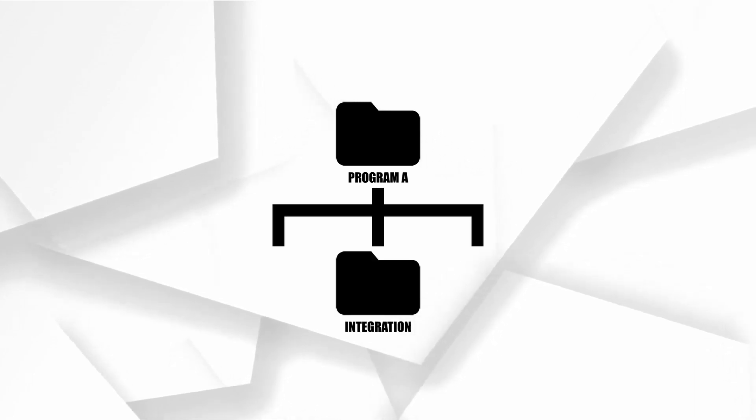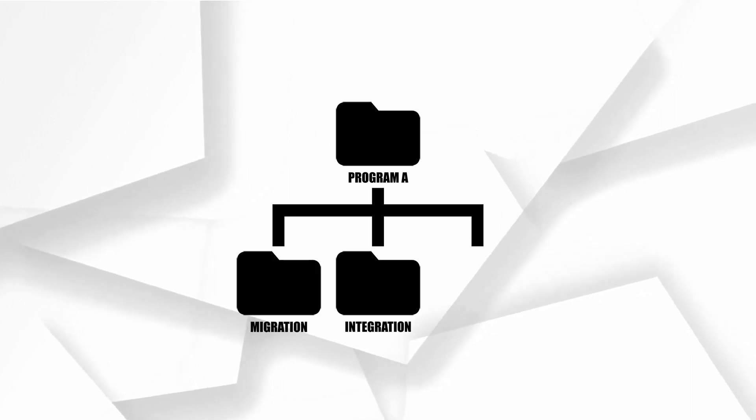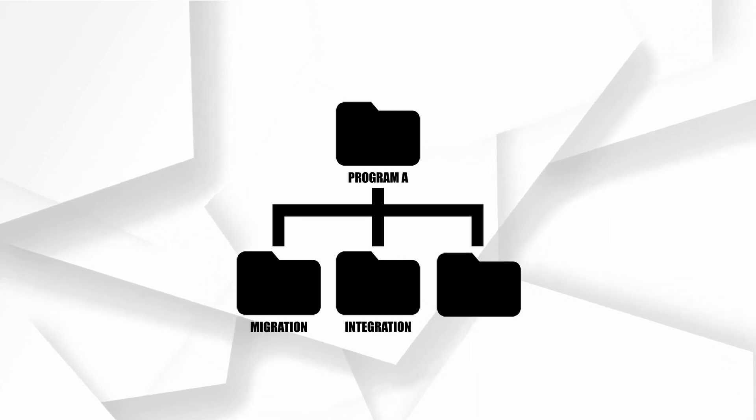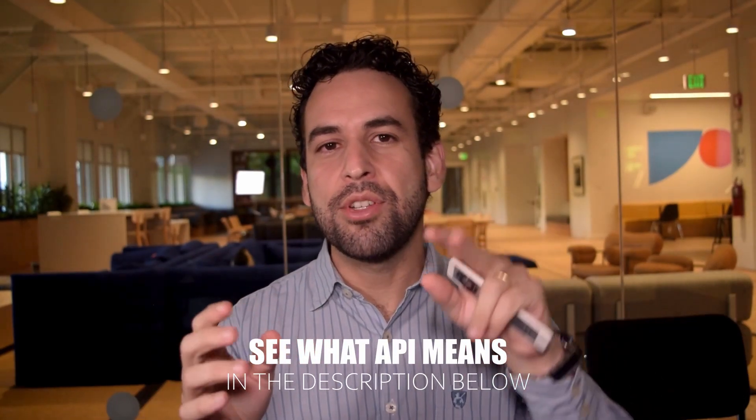Now let's imagine you are a corporate person working in a program or on a project — say, in an integration role. Your main folder will be called the name of the program, for example Program A. The next level of folders should be named for your projects: one folder called integration, one called migration, and one called reports. For your integration folder, you'll have files for planning, files for reports, and Excel files that create a matrix of APIs and integration endpoints connecting one software to another.